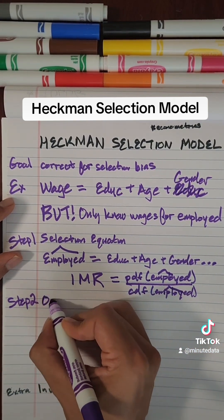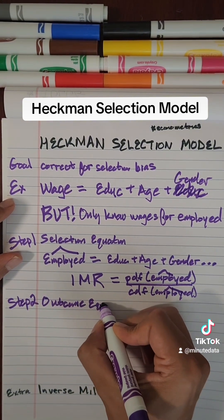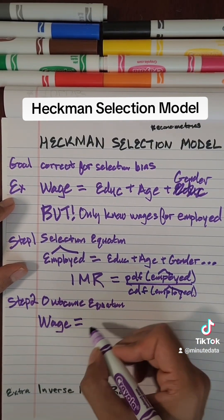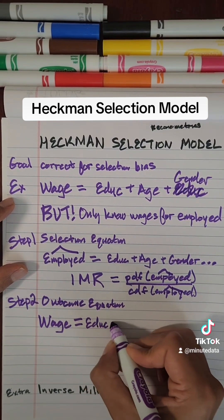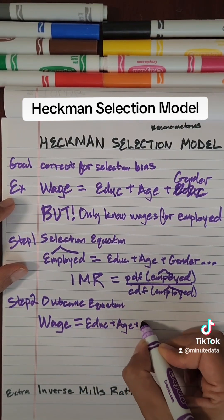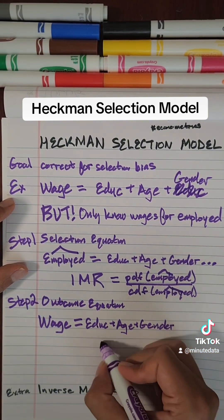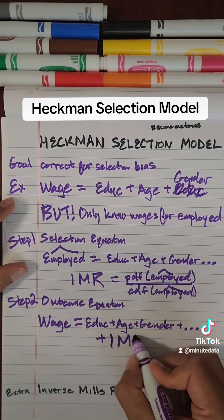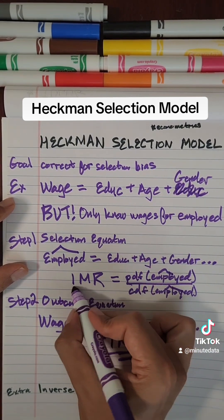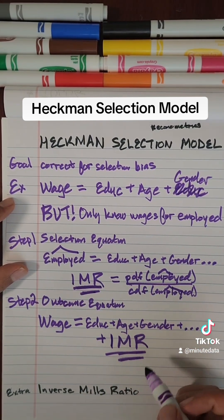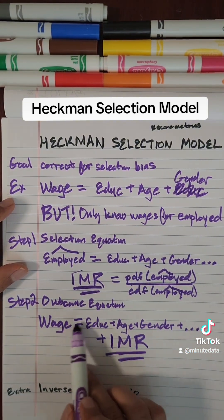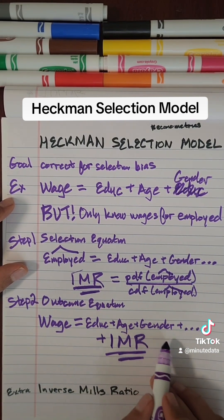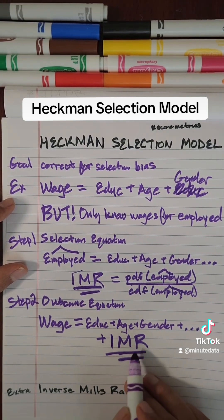Step two is known as the outcome equation. This is where we go back to modeling wage as a function of education, age, and gender — and the key part is we're also including the inverse mills ratio, representing the fact that they're employed. So we're modeling wage and its relationship with education, age, and gender, while controlling for the fact that we're selecting on employed folks.